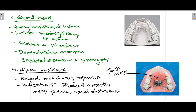The fourth appliance is the hyrax appliance, used when rapid maxillary expansion is required. In this appliance, a jack screw in the center is banded over the molars. When the jack screw is activated — by one or two mm as the dentist determines — forces are generated in the buccal direction, correcting the crossbite. Indications for hyrax appliance include bilateral crossbite, deep bite, and nasal obstruction leading to mouth breathing and consequent crossbite.